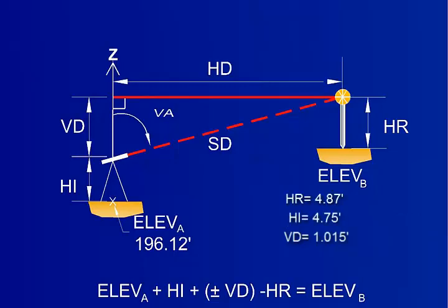Now we can use the equation we derived before to find elevation at B. Add 196.12 feet, the elevation at A, to 4.75 feet, the height of the instrument. Add the vertical distance, 1.015 feet, then finally subtract the height of the rod, 4.87 feet, to get your final elevation. The elevation at B is 197.01 feet.